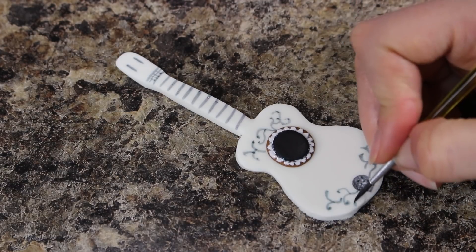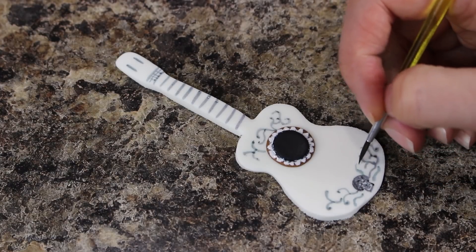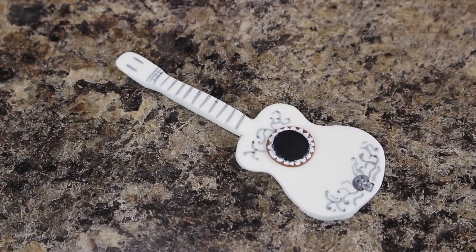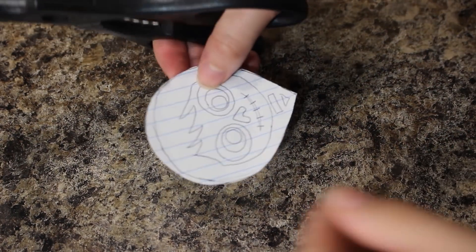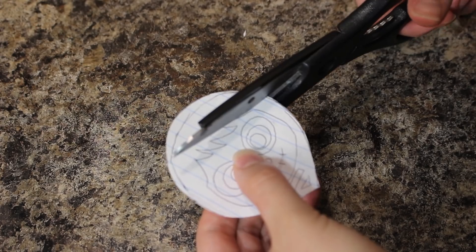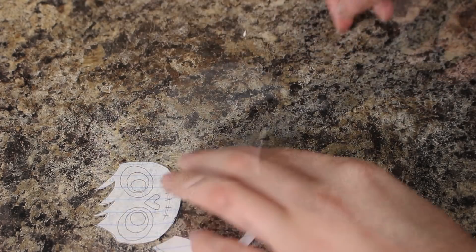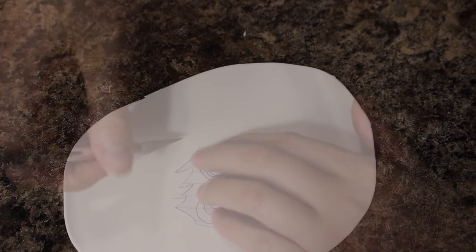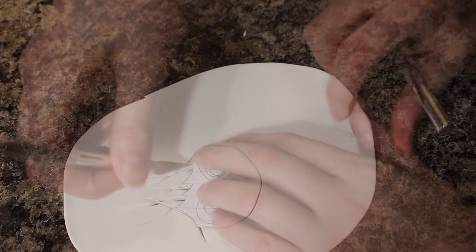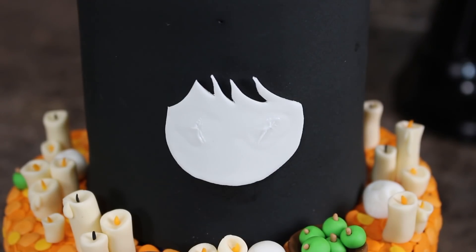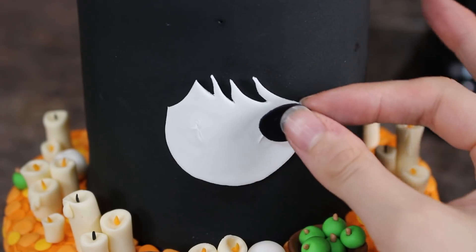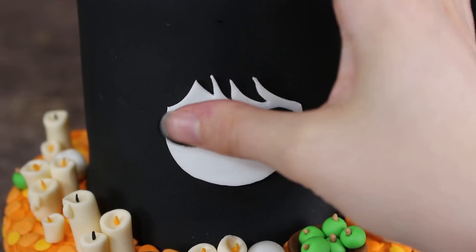My guitar needs to dry before I can add it to my cake so in the meantime I'm going to start on Miguel's face. I couldn't find an actual template for this so I had to create one using a picture that I found and I will link that below. To start out I cut out the face part of this template and then I rolled out some white fondant fairly thin and cut that shape out using my exacto knife. I attached that to the front of my cake using a little bit of shortening and then basically I just cut out all of his features and then added them in place using the template as a guide.